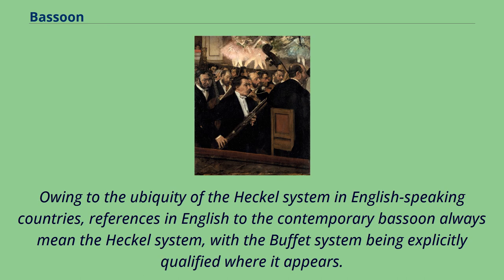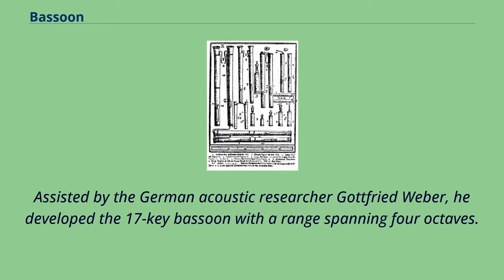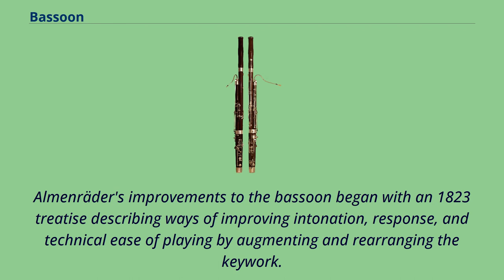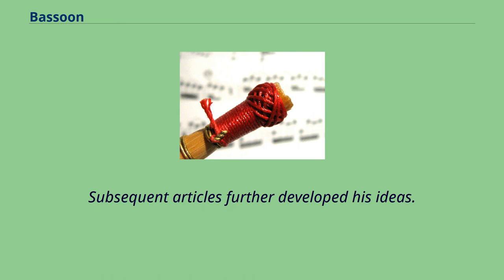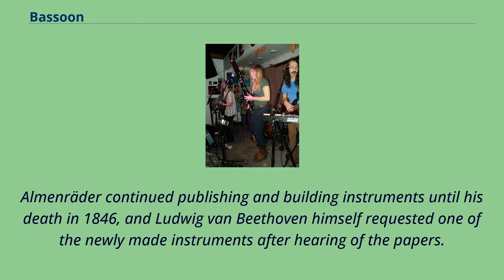Owing to the ubiquity of the Heckel system in English-speaking countries, references in English to the contemporary bassoon always mean the Heckel system, with the buffet system being explicitly qualified where it appears. The design of the modern bassoon owes a great deal to the performer, teacher, and composer Carl Almenräder. Assisted by the German acoustic researcher Gottfried Weber, he developed the 17-key bassoon with a range spanning four octaves. Almenräder's improvements began with an 1823 treatise describing ways of improving intonation, response, and technical ease of playing by augmenting and rearranging the keywork. Ludwig van Beethoven himself requested one of the newly made instruments after hearing of the papers.